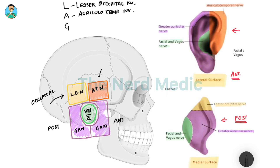The auriculotemporal nerve is in close proximity to the temporal bone. And the last letter G stands for greater auricular nerve — it supplies a great extent of the auricle. So the mnemonic is LAG, and in the center we have cranial nerves 7 and 10.